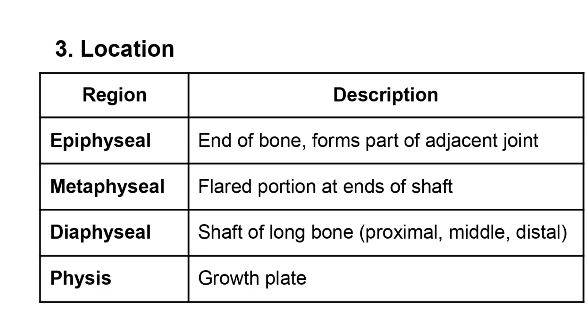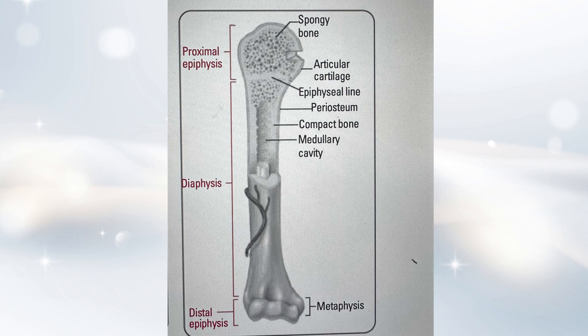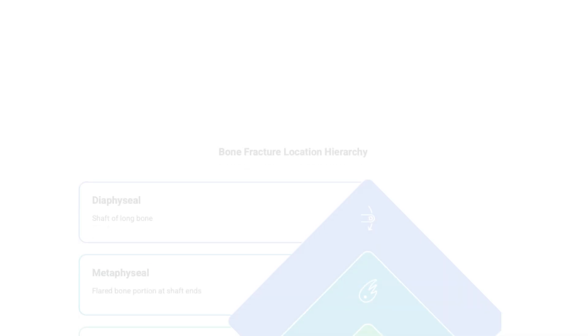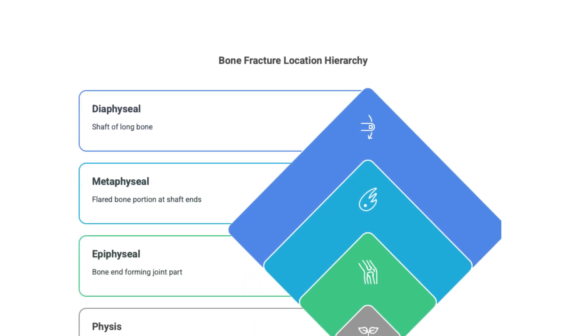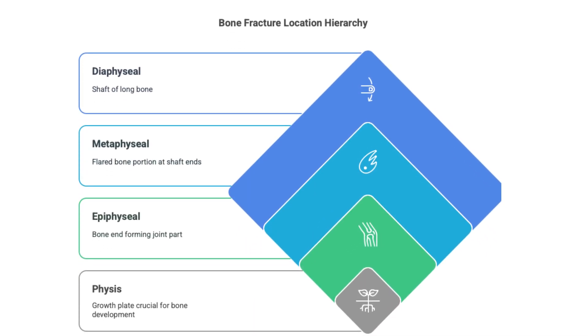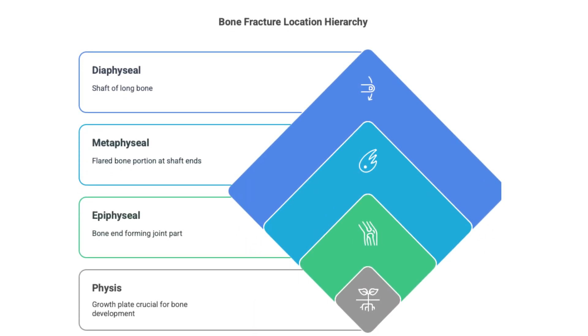So it's like giving a really precise address on the bone itself. And then particularly important, especially when talking about fractures in kids, is the physis — the growth plate — which is so crucial for a child's development.